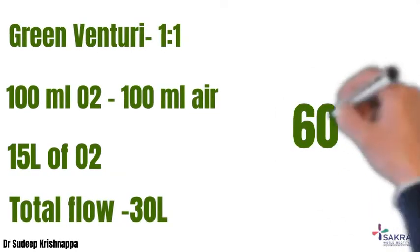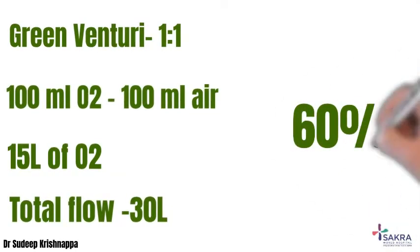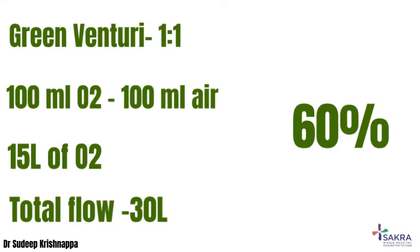In the mixture: 100 ml of oxygen contributes 100 ml of oxygen, and 100 ml of room air contributes about 20 ml of oxygen. In total, the 200 ml mixture has 120 ml of oxygen, which translates to an FiO2 of 60 percent.